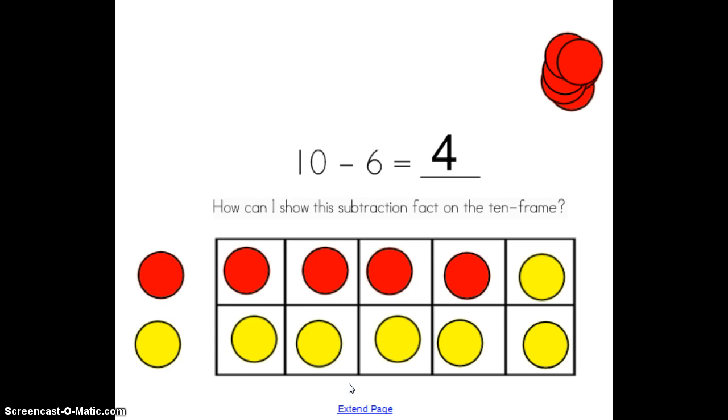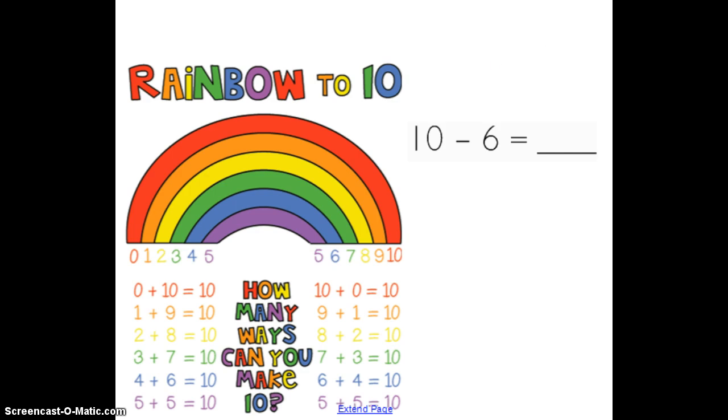So we are going to use this idea of using a 10 frame and addition to actually help us solve subtraction number sentences when 10 is the whole. When we learned about addition to 10, we learned about the rainbow to 10. Let's see if you remember. We created this rainbow to help us remember the facts that would equal 10. So we have 0 plus 10 equals 10, 1 plus 9 equals 10, 2 plus 8 equals 10, 3 plus 7 equals 10, 4 plus 6 equals 10, and 5 plus 5 equals 10.